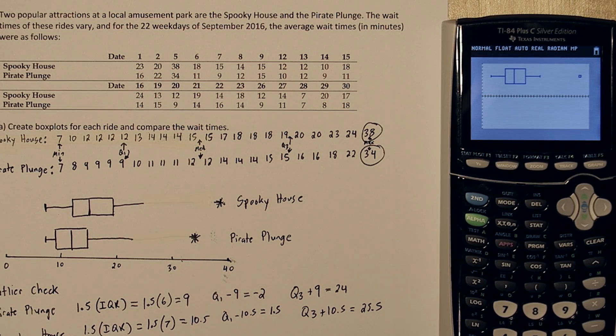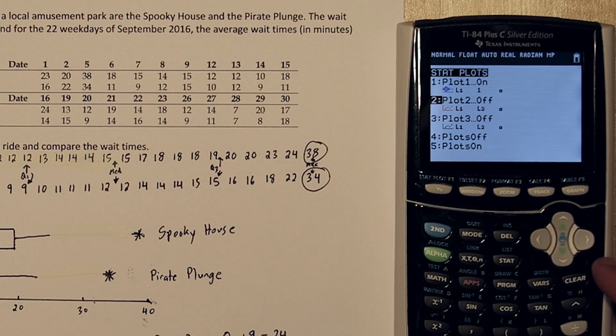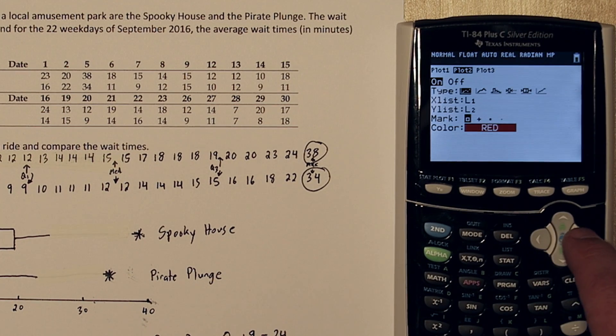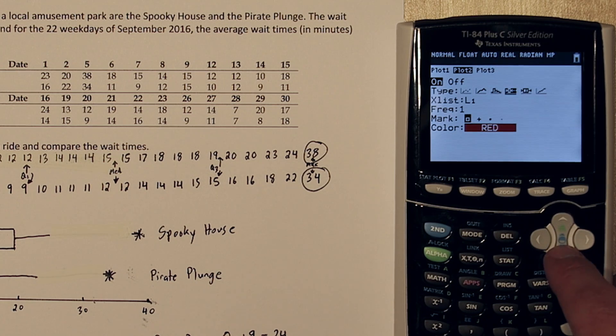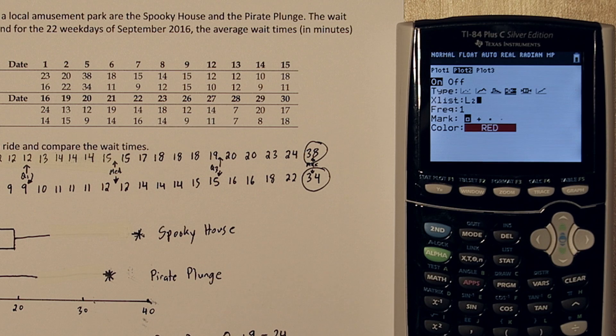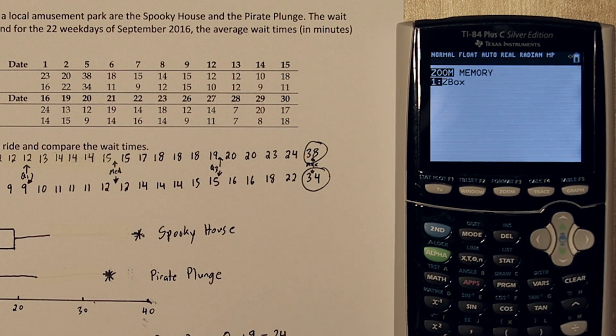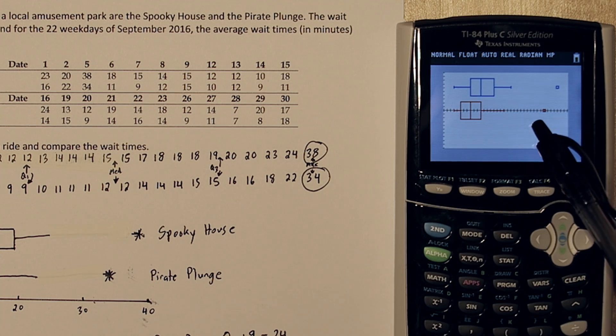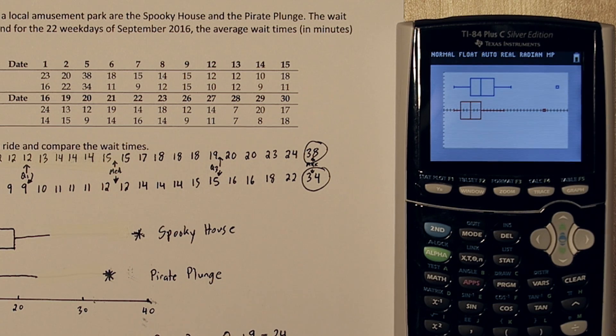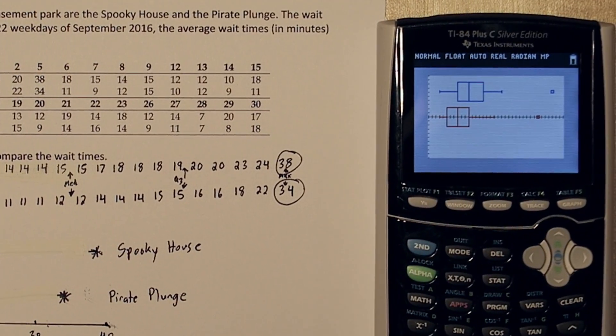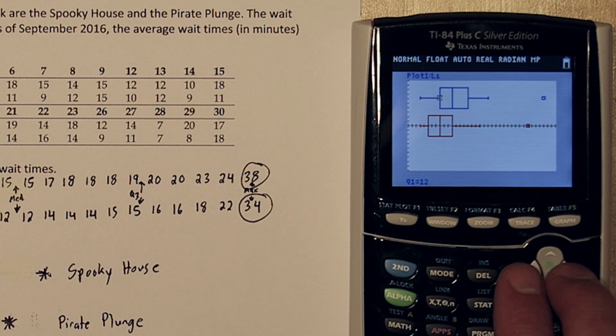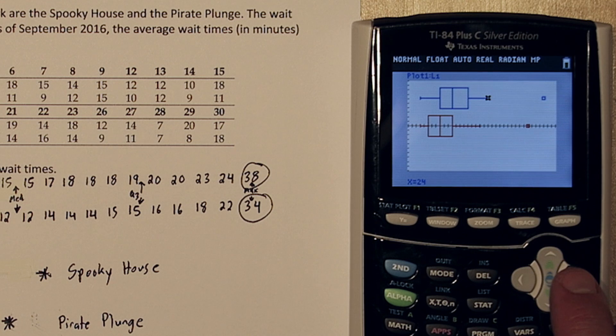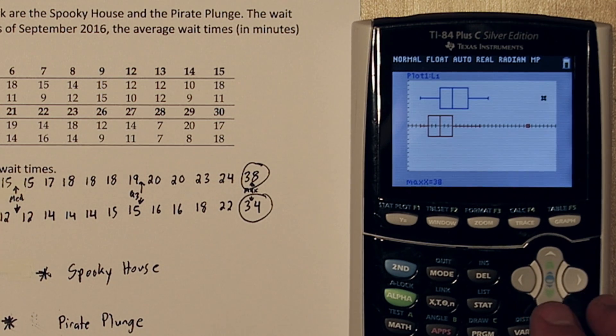Now let's get the Pirate Plunge box plot on there. If you press 2nd and Y equals again, go down to Plot 2. You're going to turn Plot 2 on, choose Modified Box Plot, and you need to change this to List 2. So press 2nd and the number 2. Now when we press Zoom 9 again, there's our other box plot for Pirate Plunge. Now suppose you used your calculator to graph these, and now you want to transfer it to the paper. Here's a useful function. If you press Trace, you can use the arrows to scroll around and jump from each of the values. So here's the minimum of Spooky House, quartile 1, median, quartile 3, maximum that's not an outlier, and then there's the true maximum. And then you can go down and check all the data for Pirate Plunge as well.